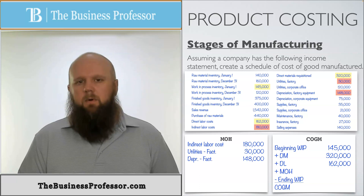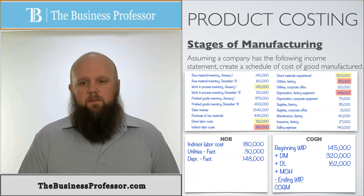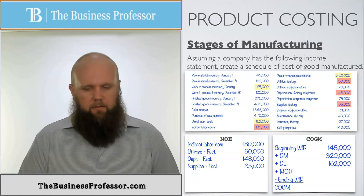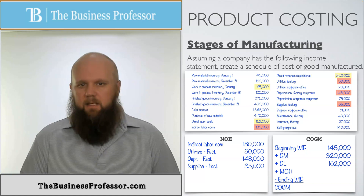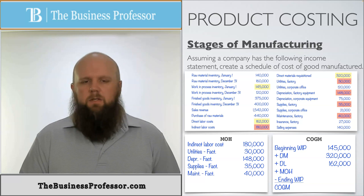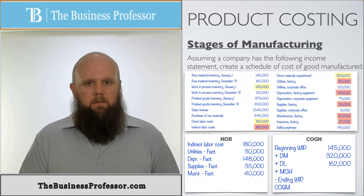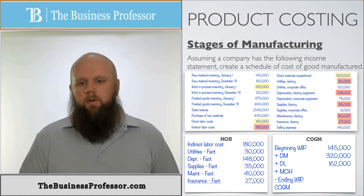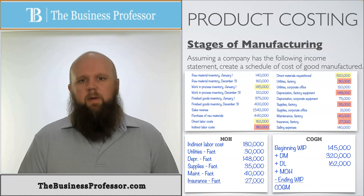Supplies for the factory — yes, we include it. Supplies for the corporate office — no, that's an S&A expense. Maintenance for the factory — yes. Insurance for the factory — yes, include that one as well. Hopefully you're seeing the pattern: everything labeled 'factory' is manufacturing overhead. Adding all those components together gives us a total manufacturing overhead of $460,000.